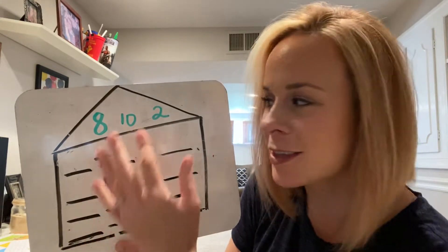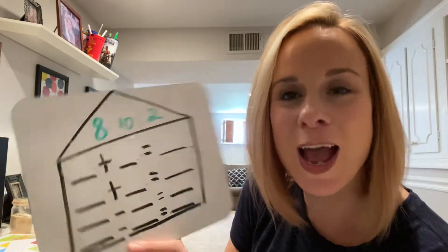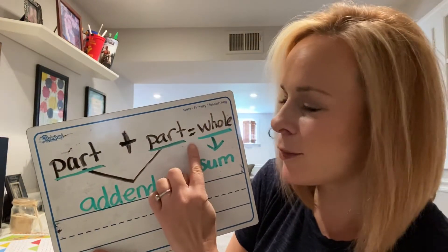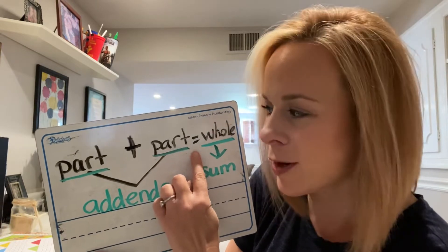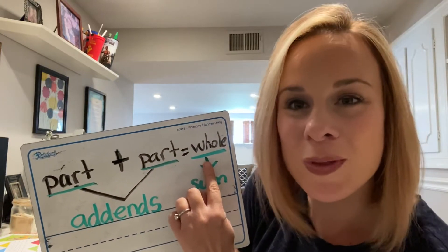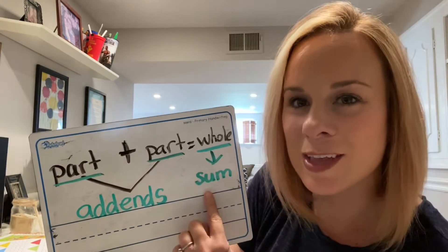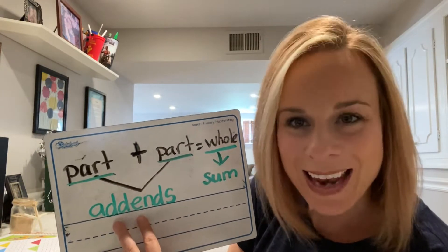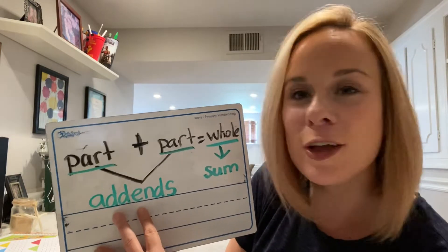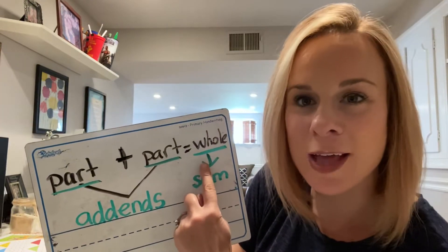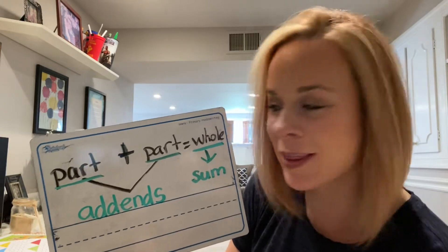Before we see how this fact family works, let's see what you already know about addition and subtraction. You learned last week that we always use the plus and the equal sign in an addition sentence. An addition sentence is made up of two parts to get the whole. The whole is known as the answer or the sum. The two smaller parts that come before and after the plus sign are known as addends, and the answer after the equal sign is known as the sum or the whole.